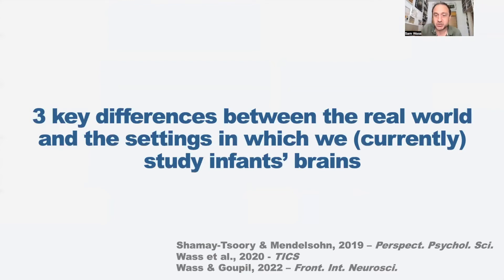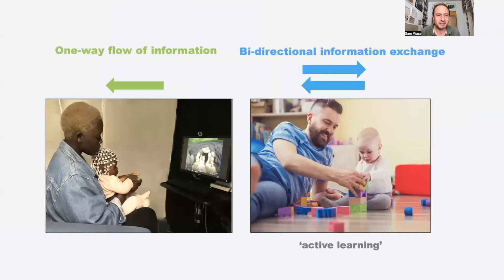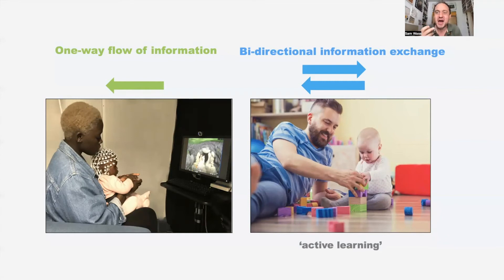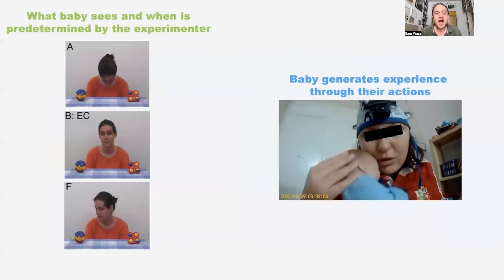So what are the differences? Three key differences between the real world and how we currently study babies' brains. Firstly, the way we study it involves a one-way flow of information from the screen to the baby — we're showing them stuff and measuring how their brain reacts, and that's really not how we use our brains in social interaction. Adults respond to what children do, and children process information differently depending on whether it's an attentional episode they initiated. Also, experiments at the moment use a predetermined sequence of events determined by the experimenter.